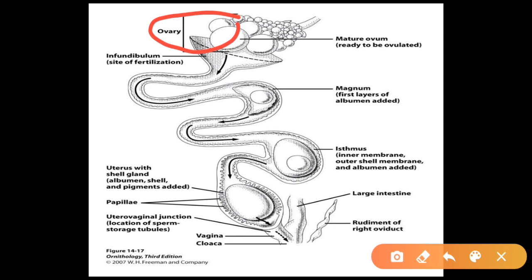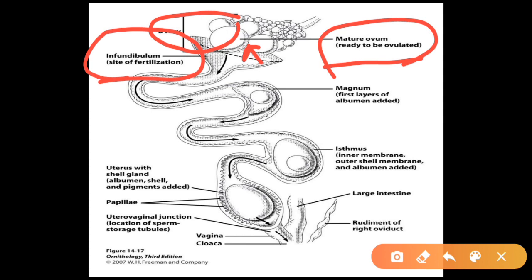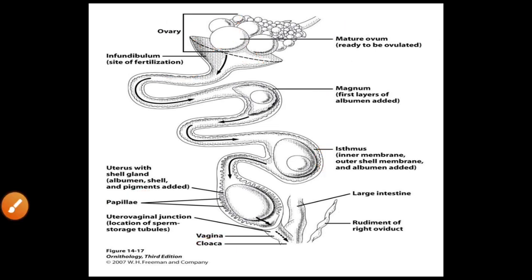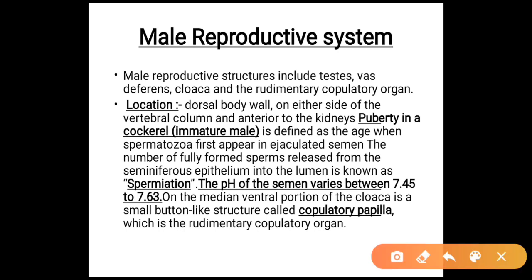Reviewing the diagram: the ovary contains mature ova ready to ovulate. The infundibulum is the site of fertilization. The magnum is where the first layer of albumin is added. The isthmus is where inner and outer membranes and albumin are added. The uterus or shell gland is where albumin shell and pigments are added. The utero-vaginal junction is the location of sperm storage tubules. Then there is the vagina, cloaca, and the rudimentary right oviduct is also visible.